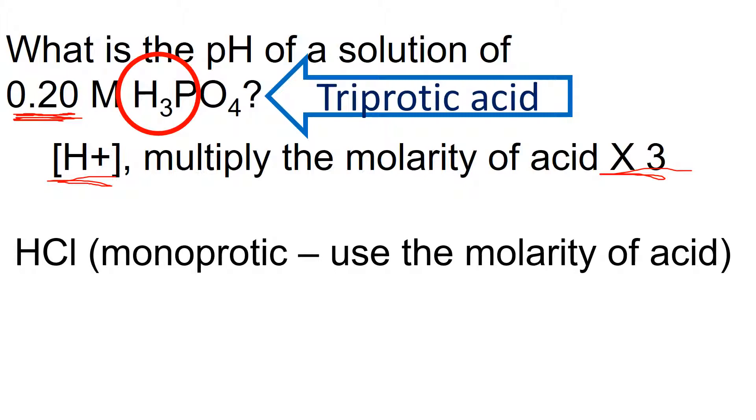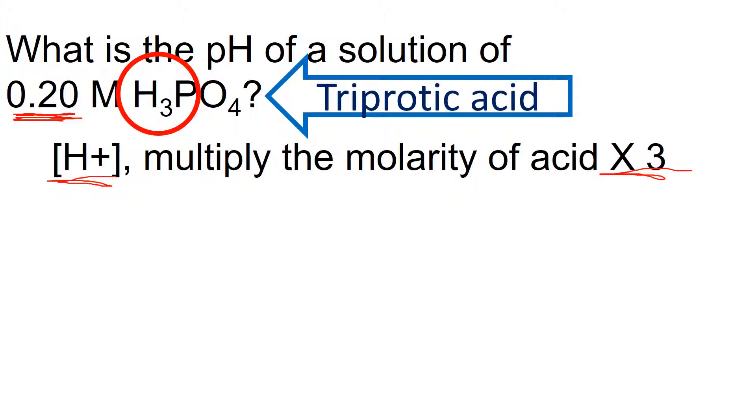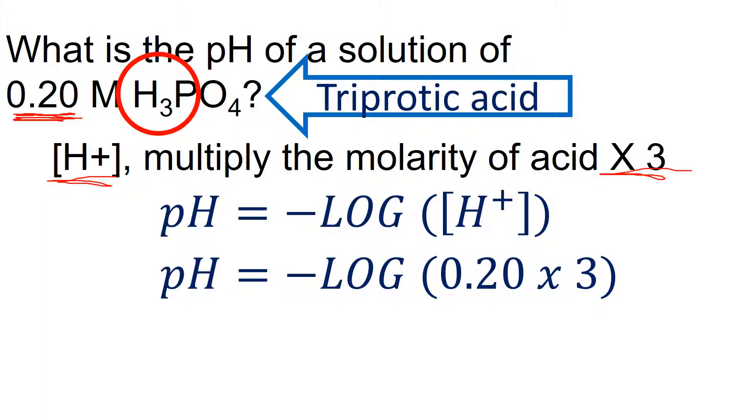What about other acids? An acid like hydrochloric acid only has one H, so we would just use the molarity of the acid. Something like H2SO4, sulfuric acid, it's diprotic, which means it has two protons or two hydrogens. So whatever its molarity is, we would need to multiply that by two to get the hydrogen ion concentration.